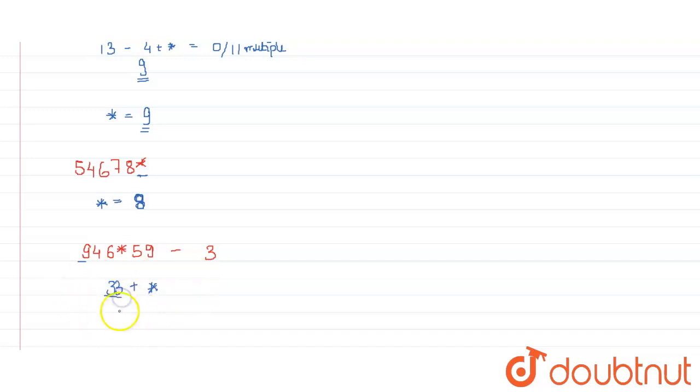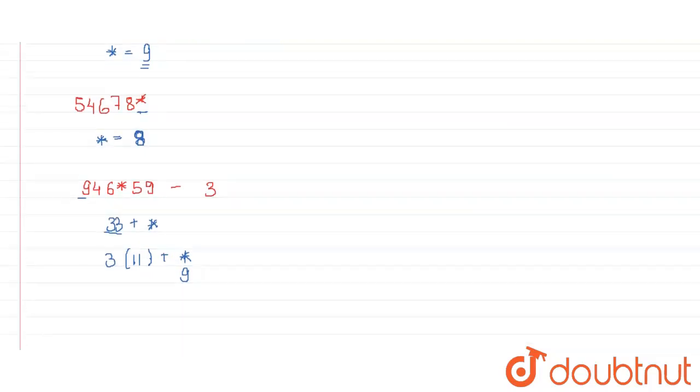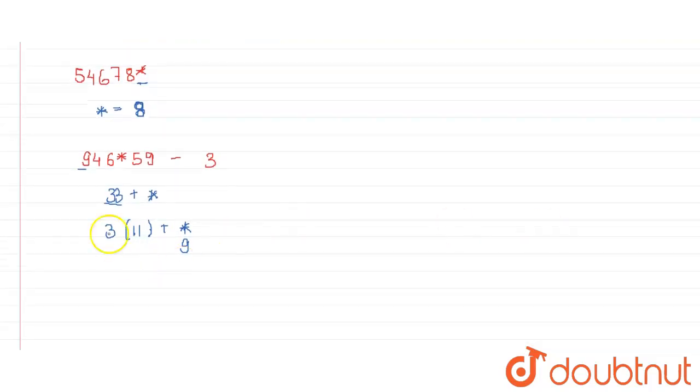We know that 33 is a multiple of 3, so we can say 3 times 11 plus asterisk. We just have to check the largest number which is a multiple of 3, which is 9. When we add 9 to 33, we get 42, and we know that 42 is a multiple of 3. So the value of asterisk will be equal to 9 in this case as well.